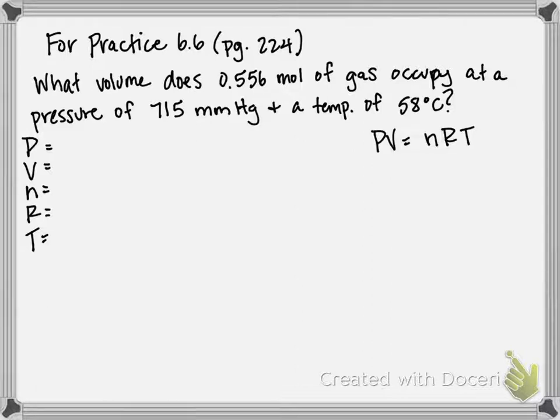So automatically, there are two things we know we're going to have to do before we plug everything into our ideal gas law equation. We're given our pressure in millimeters of mercury, and we're given our temperature in Celsius. So millimeters of mercury, that's going to need to be converted to atmospheres.